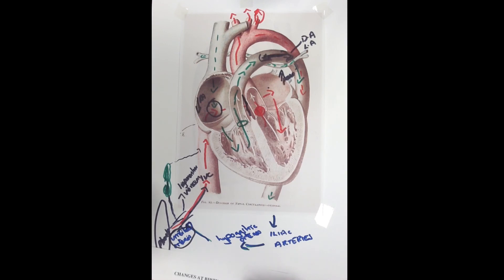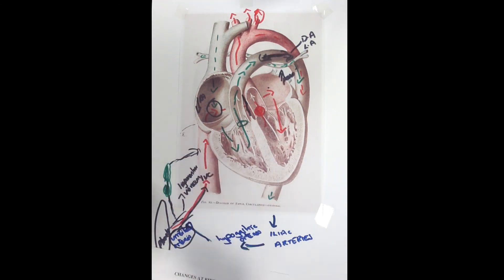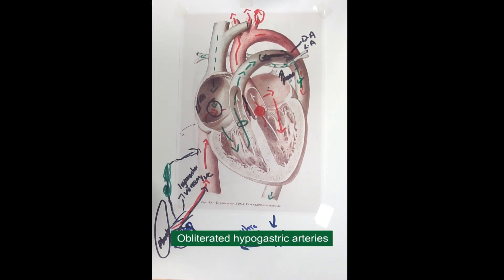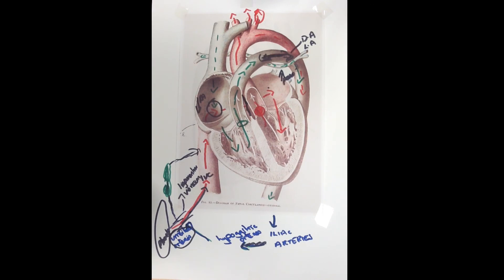The liver now receives increased blood flow and performs its usual role, as there is no longer a placenta to perform the liver's functions. The hypogastric arteries are no longer needed; they become obliterated and are known as the obliterated hypogastric arteries. The baby has now moved from a fetal circulation to an adult circulation, driven by changes in pH, carbon dioxide levels, thoracic squeeze, and external and internal stimuli.